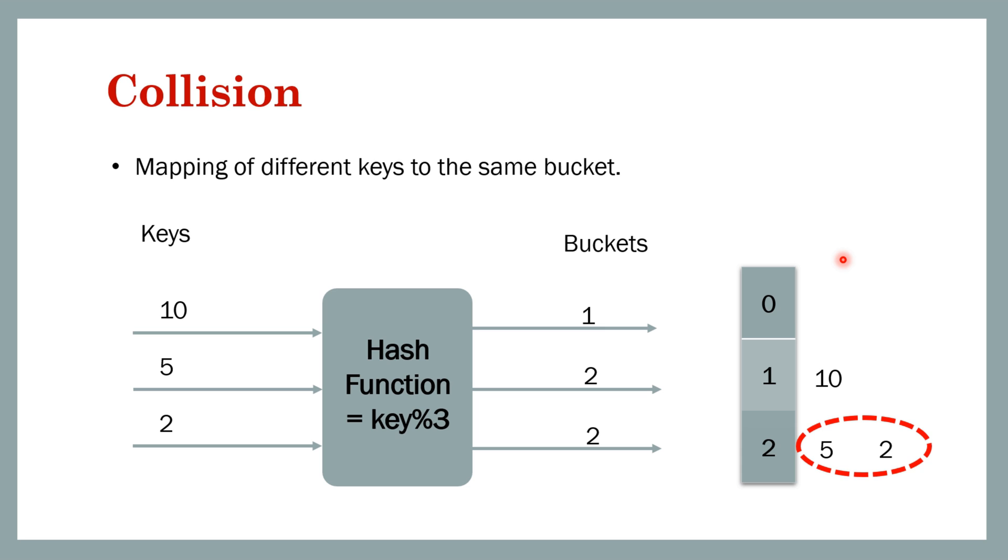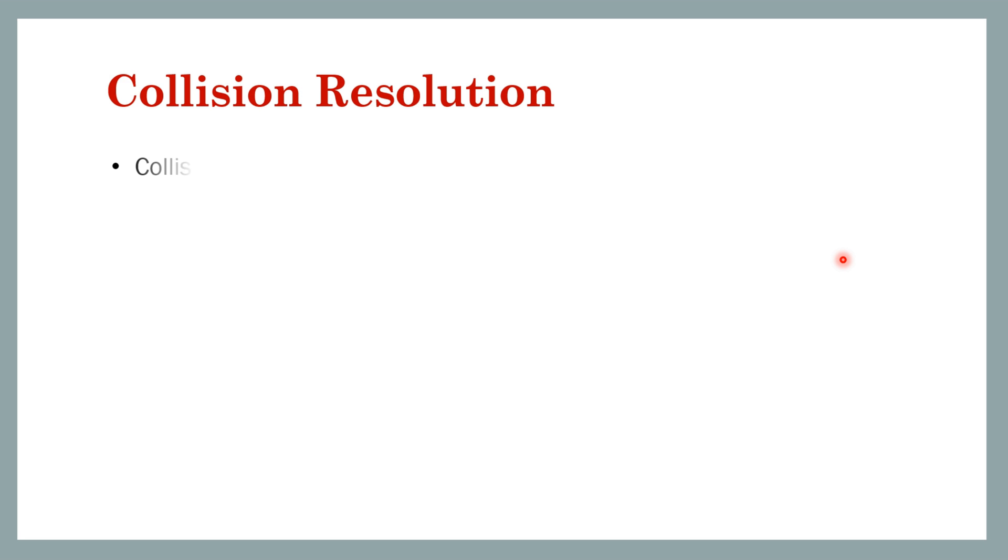If collision doesn't occur, then there will be at max one key in any bucket, so we don't need to handle collision. But most likely collision is inevitable. You cannot get rid of it. There may be some simple use cases where there is no collision, but it's inevitable and you need some algorithm to handle this scenario.